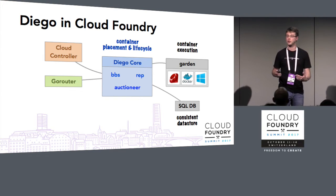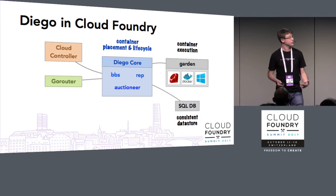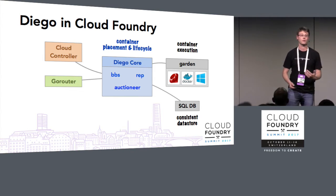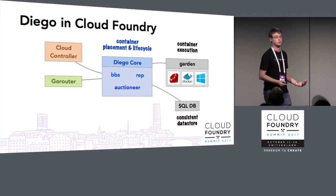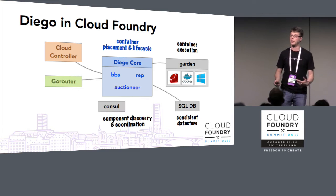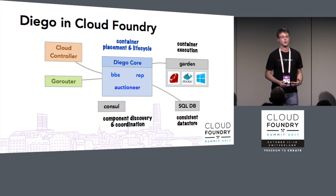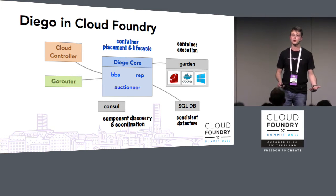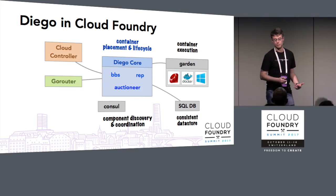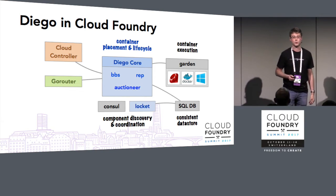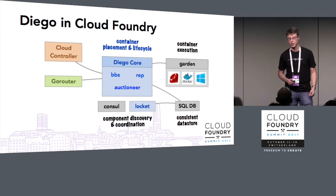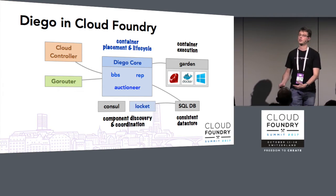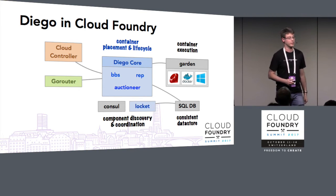Diego relies on some external dependencies to operate. Principally, it requires a consistent data store to keep track of all distributed state — nowadays a SQL database such as MySQL or Postgres. It also relies on an external system for component coordination and discovery. For the past few years that's been Consul, but we've been moving away from that and introducing a new component called Locket to help deal with lock coordination among components. Locket also relies on a relational database to operate.